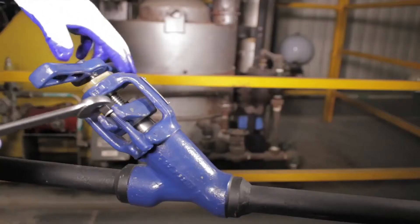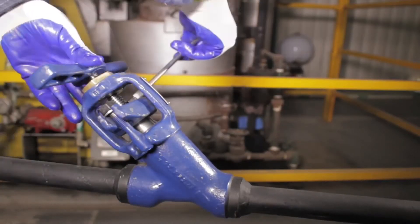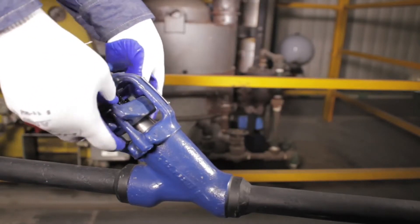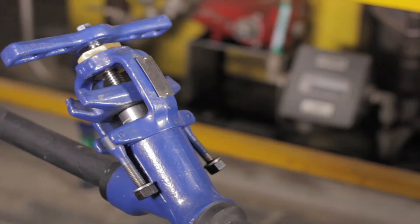First, loosen the swing bolts and let them drop out of the way. This allows you to lift up the packing gland. Nuts do not need to be removed from the swing bolts. Swing bolts are long enough to swing with the nut still on.